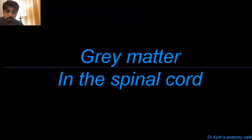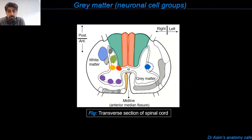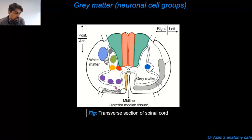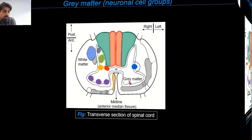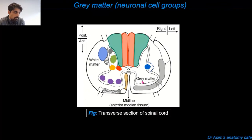Now let's take up the gray matter of the spinal cord. What you're looking at here is an illustration of a horizontal slice taken through the spinal cord. On a cut section, the gray matter is basically an H-shaped pillar with the anterior and posterior gray columns, and sometimes a lateral gray horn in the spinal cord as well. The gray matter consists mainly of neuronal cell bodies, so let's summarize the important neuronal cell bodies in the posterior, lateral, and anterior gray horns.